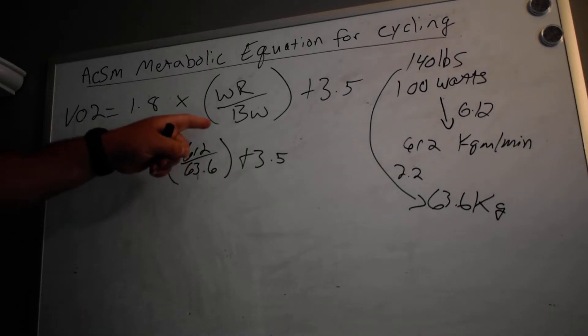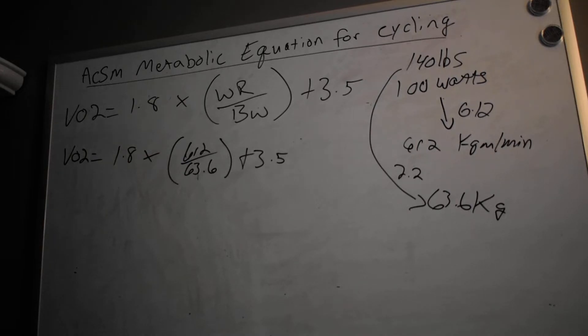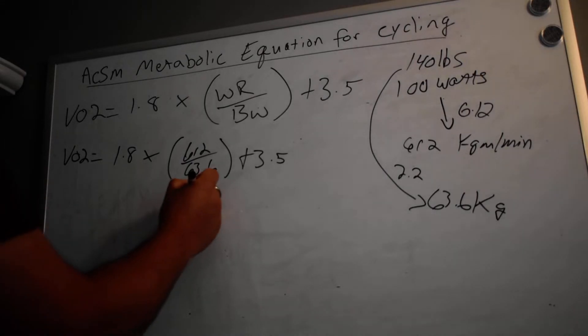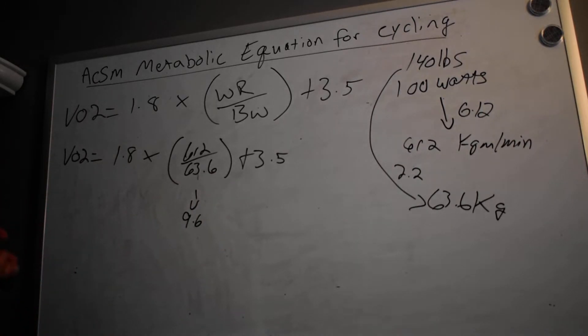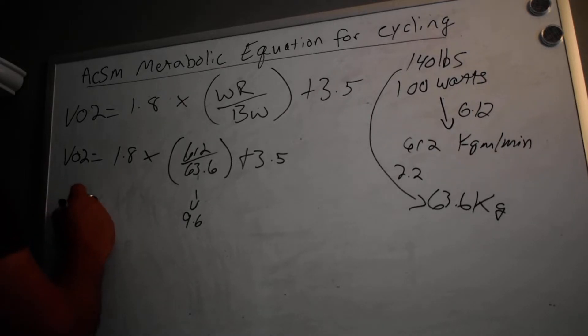Then we simply do our arithmetic steps. We're going to do this in parentheses first—this 612 divided by 63.6—and that gives us about 9.62. So what I'm going to do is round that to 9.6. I'm going to use just the tenth, I'm not going to go out to the hundredth.